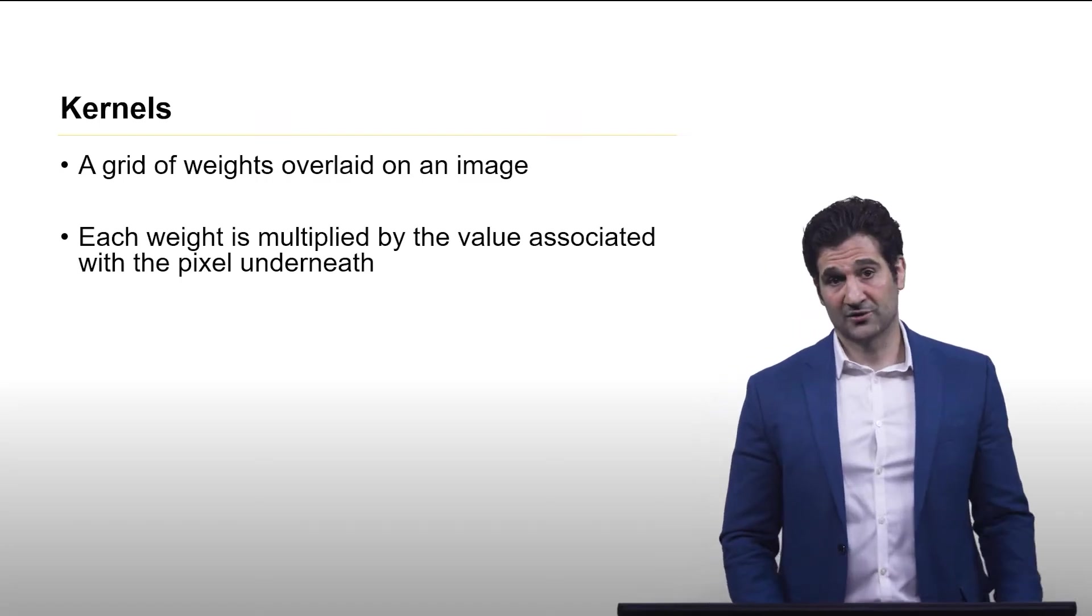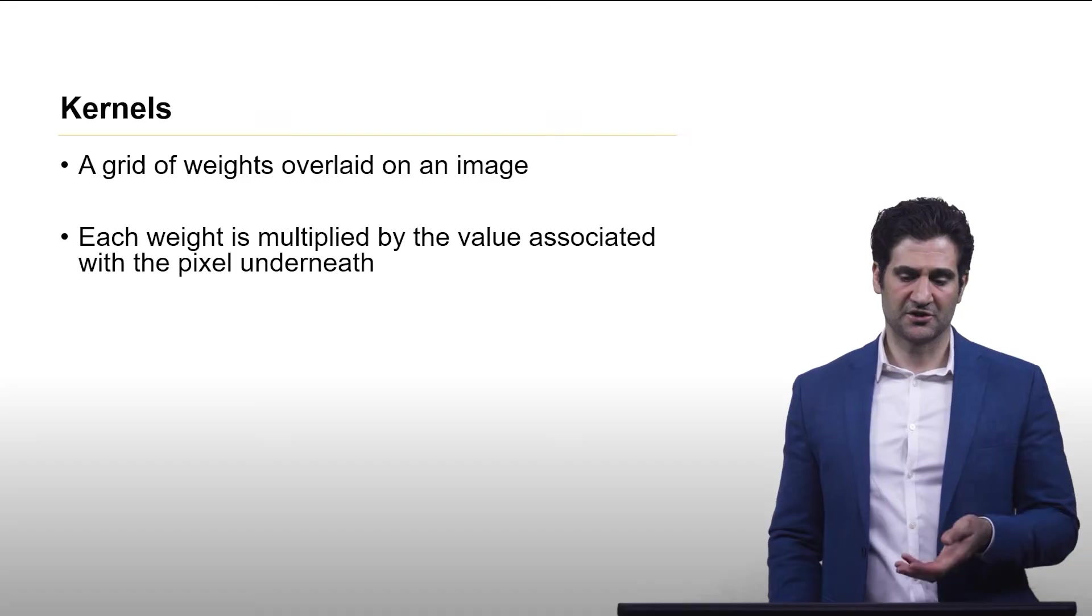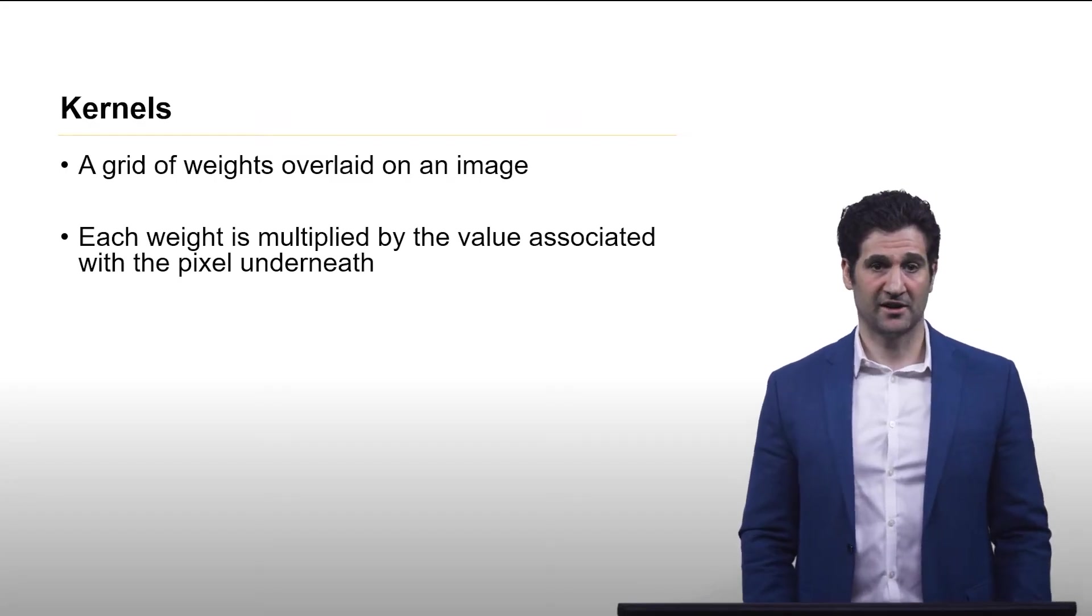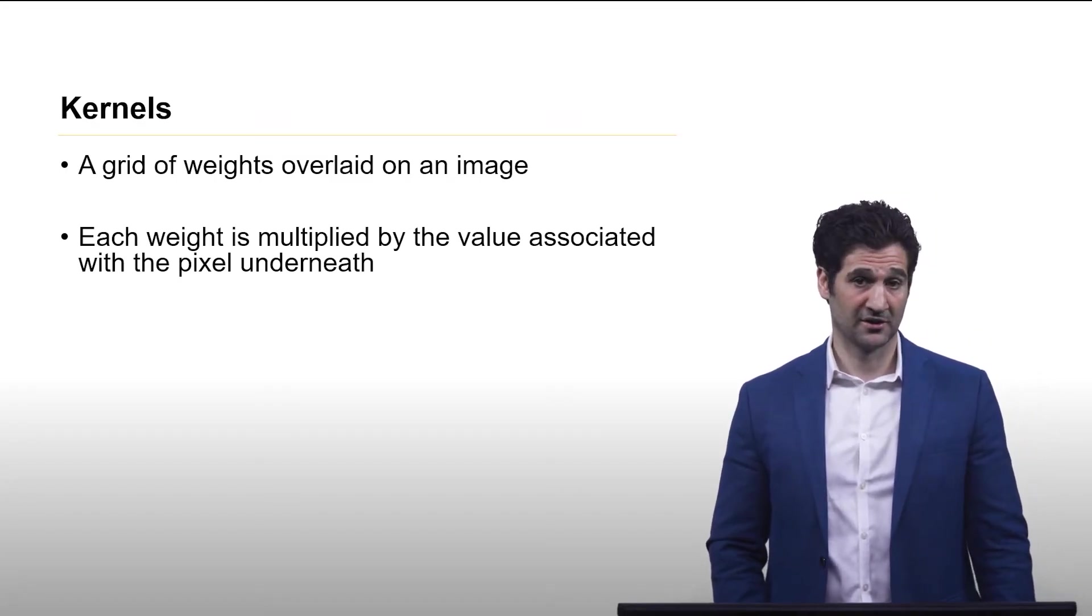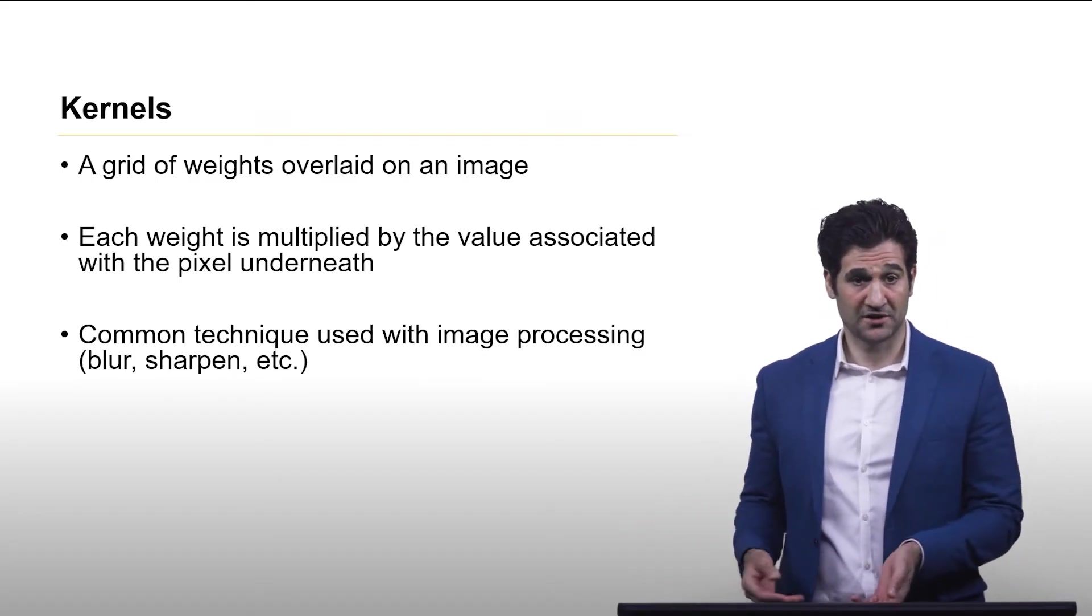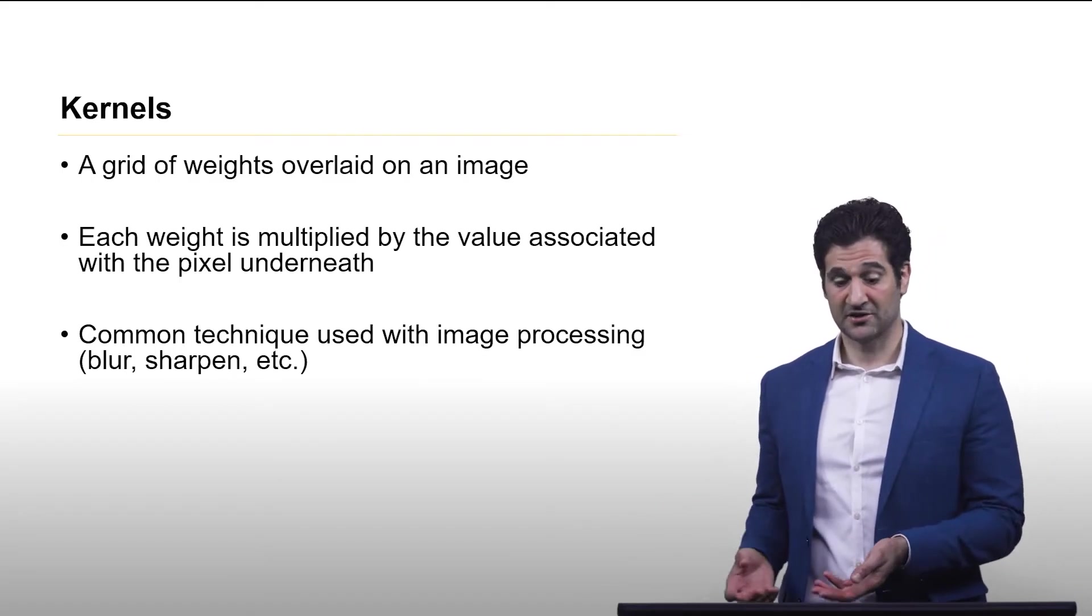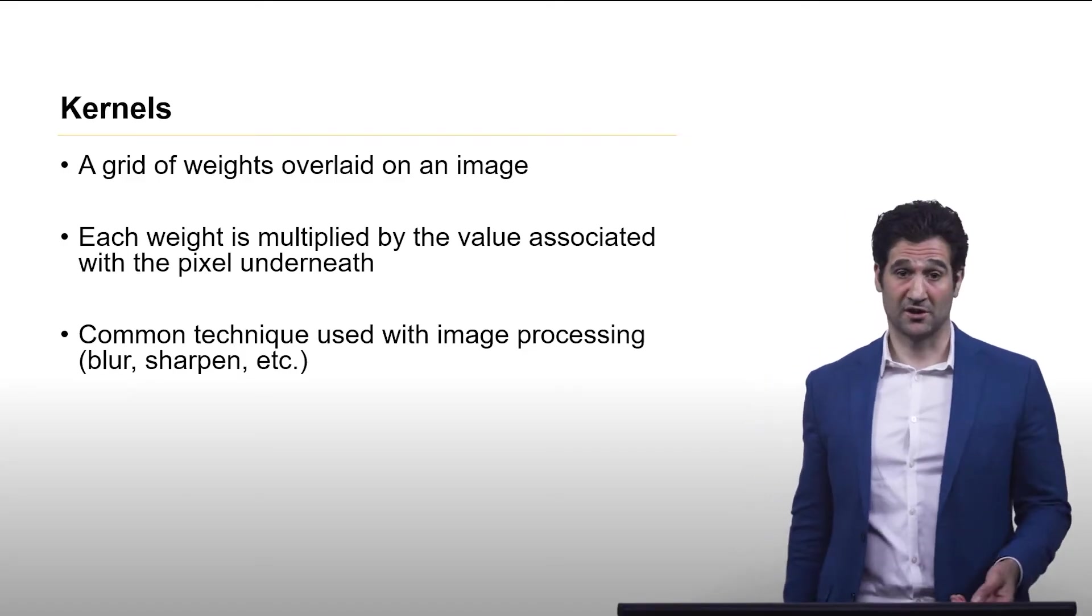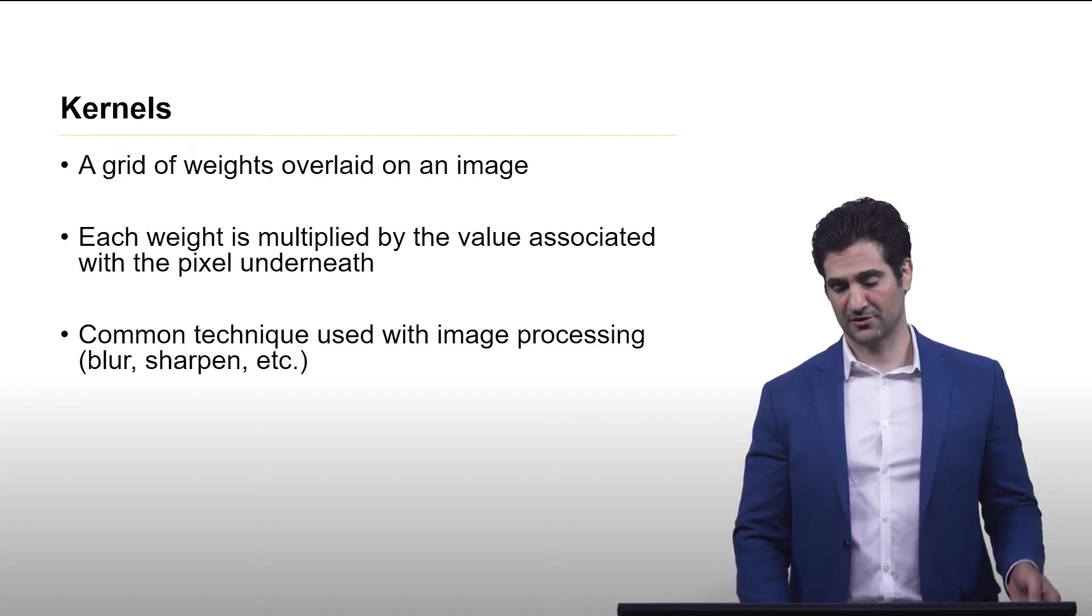The way this works is this set of weights is then multiplied by the pixel values associated with the picture underneath. This is commonly used in image processing for things outside of machine learning such as adding a filter to an image causing an image to blur or sharpen.